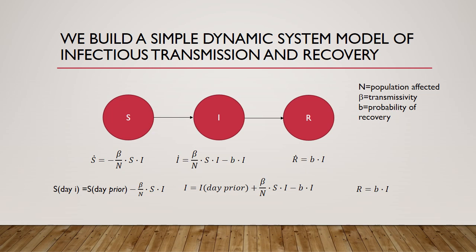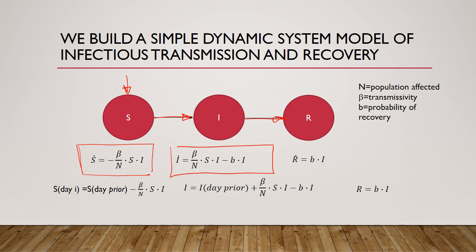The simple model looks like this. We take people who are susceptible to infection and move them to the infected pool, and some of those who are infected then recover. There are simple models that govern the rate at which people leave the susceptible population, given by this equation here. The rate at which the infected population grows is given here, and the rate at which the recovered population grows is given there.